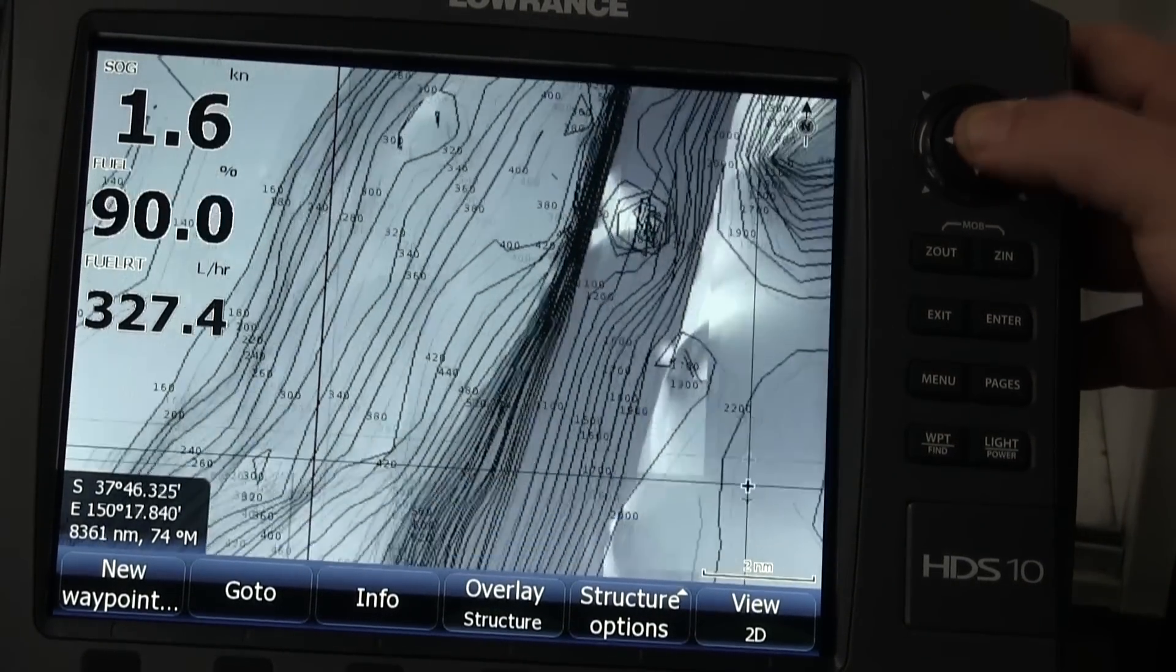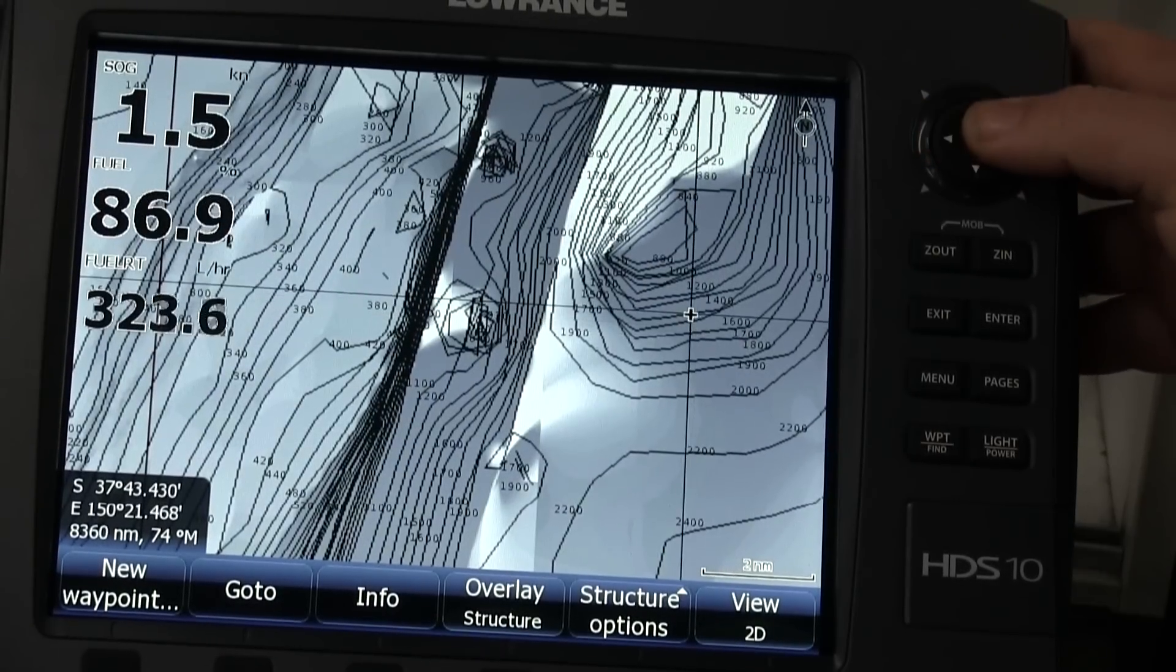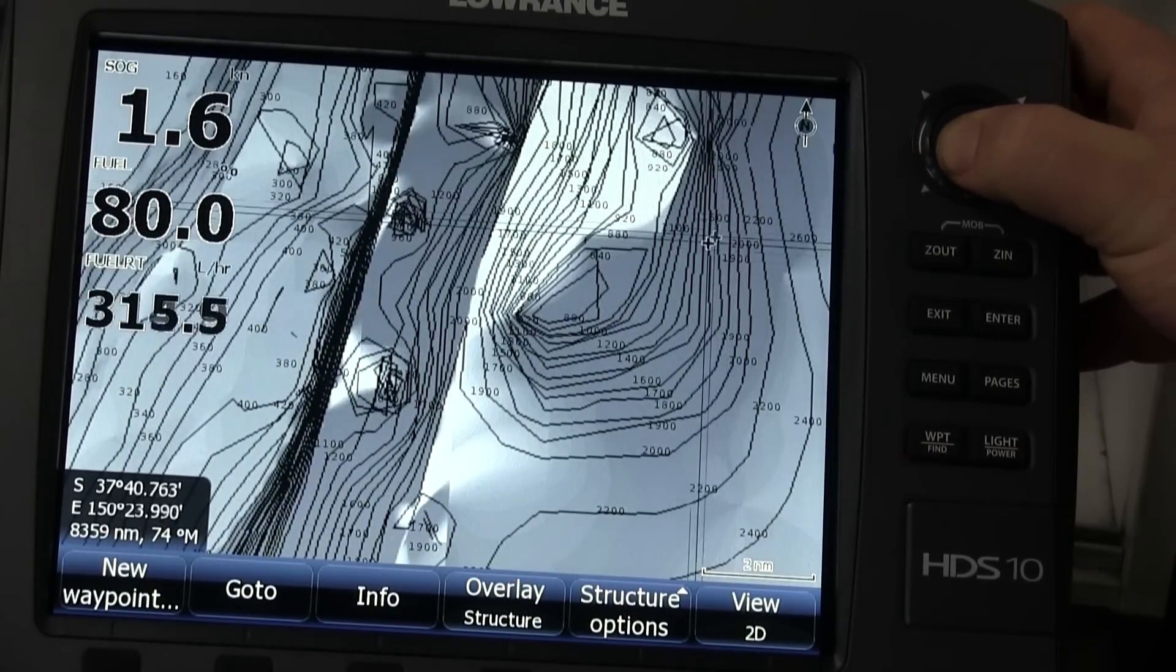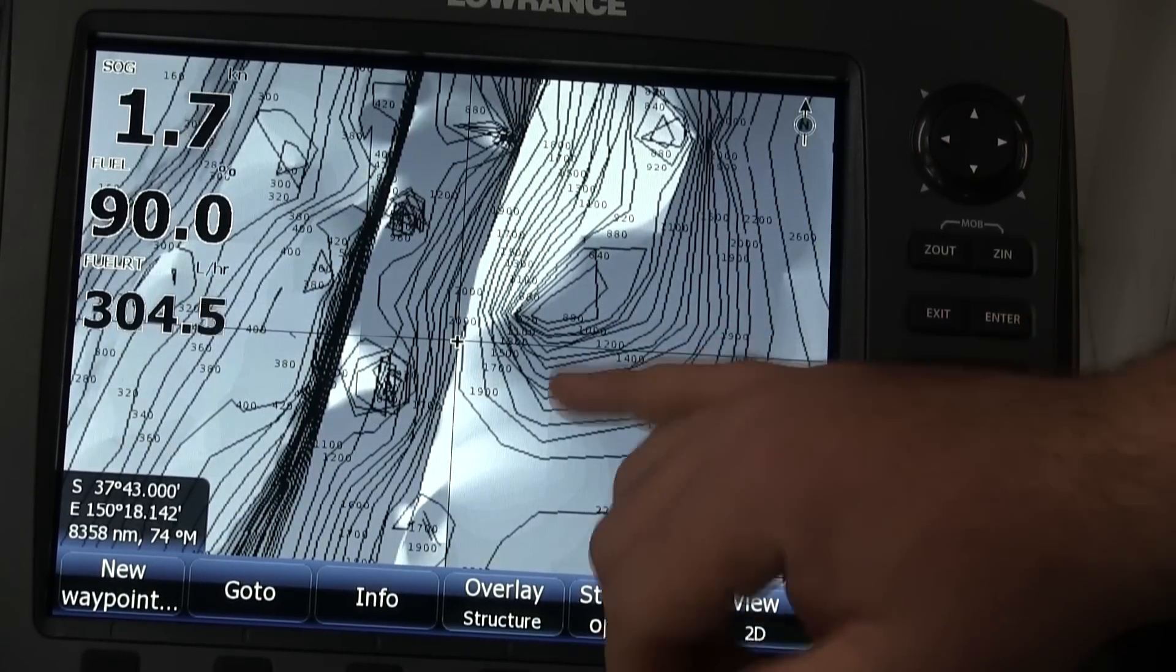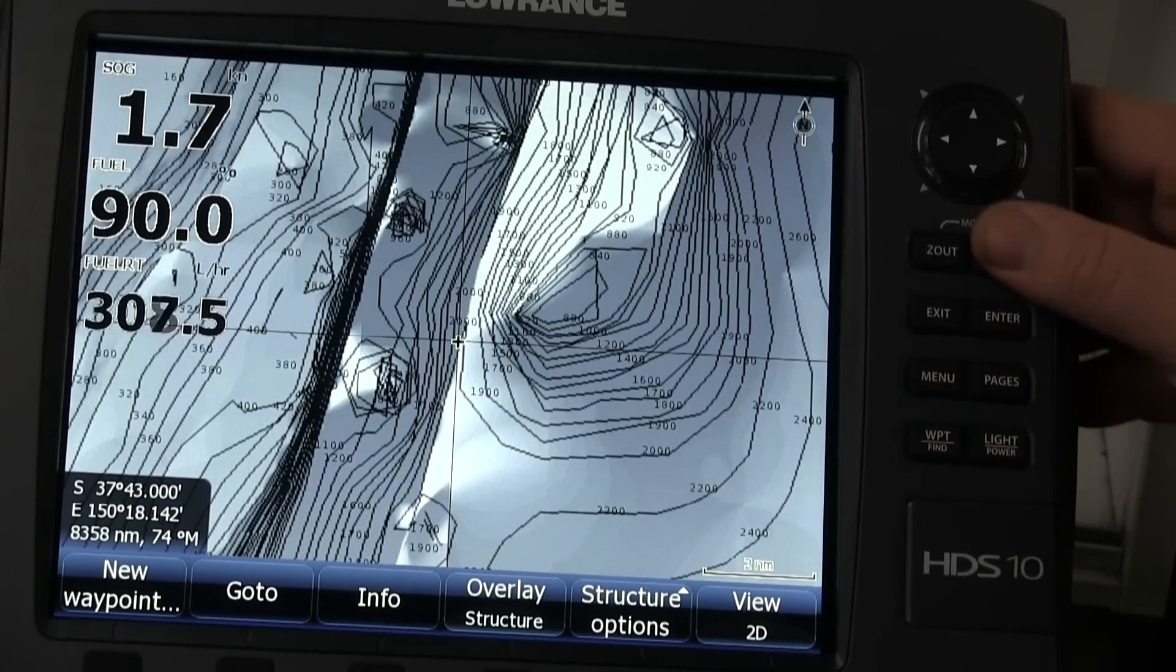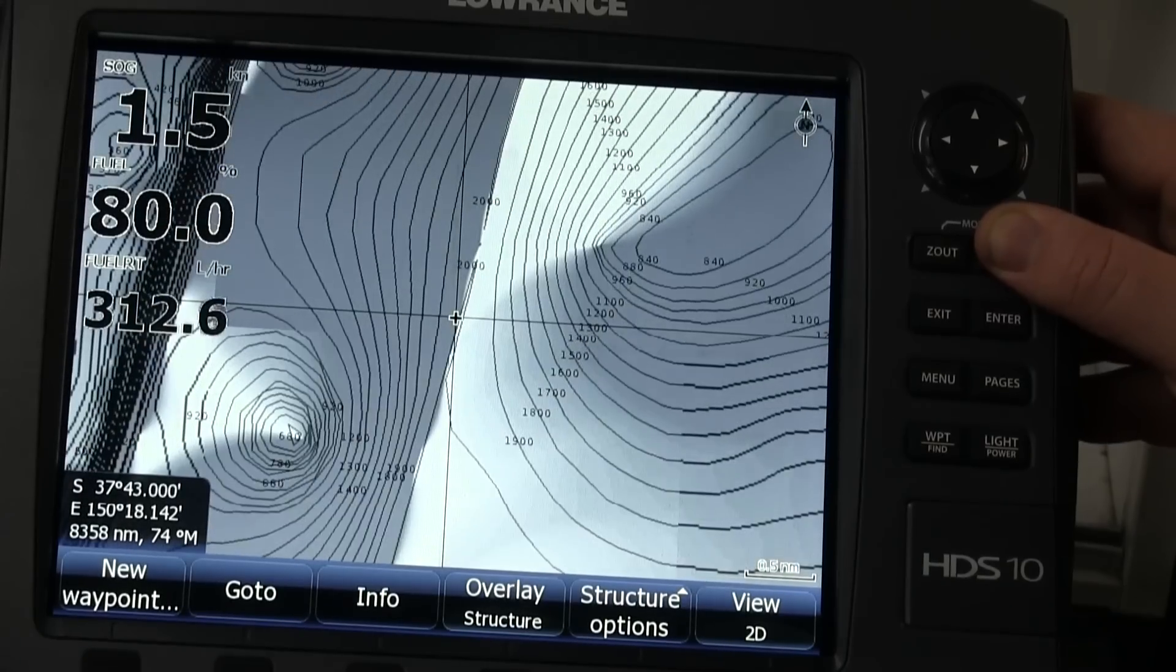The big thing you'll see immediately is that we've got even more contours than standard. If I look around here for instance, I'm able to see any rise, any drop, the whole lot. And the more I zoom in, the finer the detail.